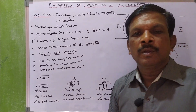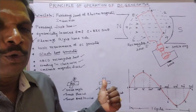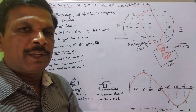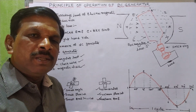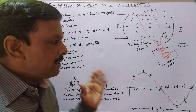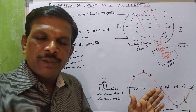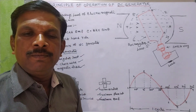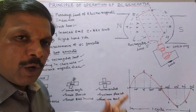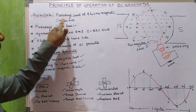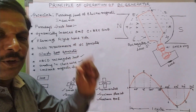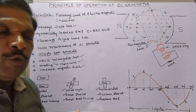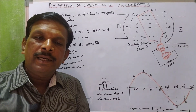In this video we are going to discuss the principle of operation of a DC generator. A DC generator is a machine which converts mechanical energy into electrical energy. It works on the principle of Faraday's law of electromagnetic induction. According to Faraday's first law, whenever a conductor cuts the magnetic flux, an EMF is induced in the conductor.